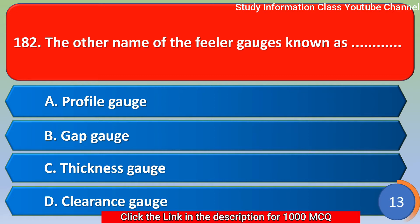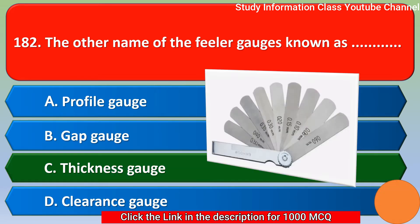Next question: the other name of the filler gauge is known as — option A profile gauge, option B gap gauge, option C thickness gauge, option D clearance gauge. The correct answer is option C — thickness gauge.